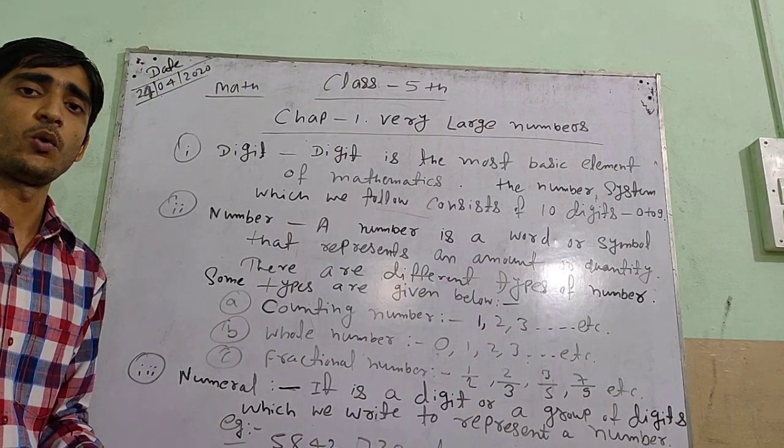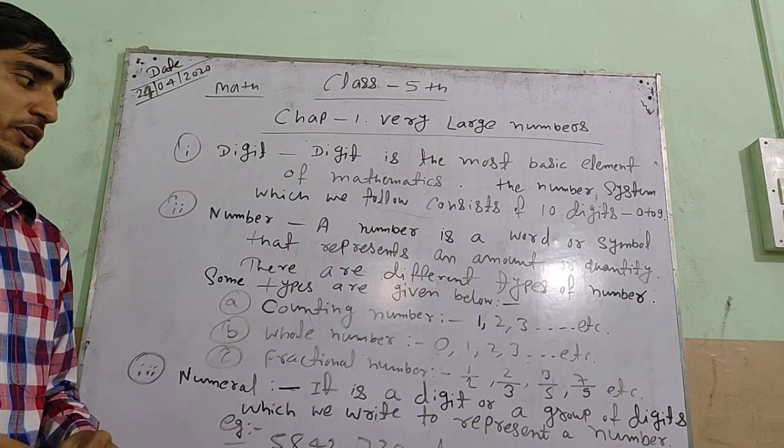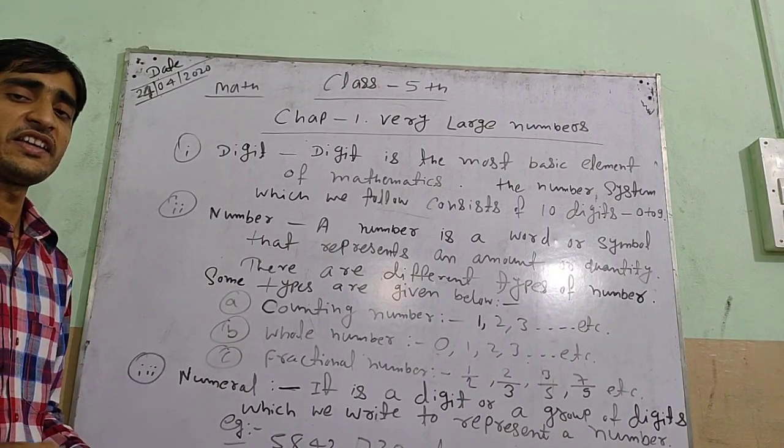This number is a whole number. Next, number is a fraction number. 1 by 2, 2 by 3, 3 by 5, 7 by 9, etc.